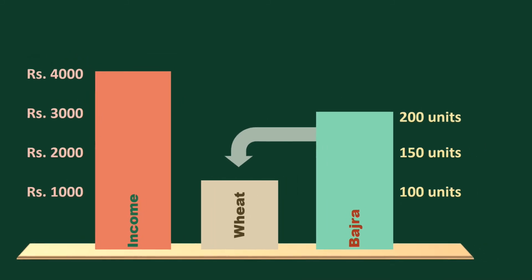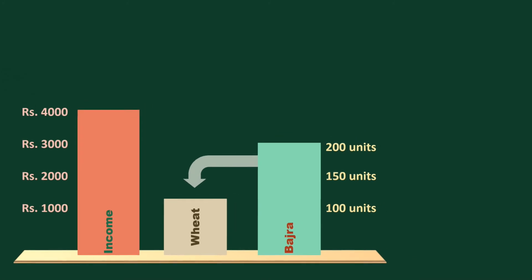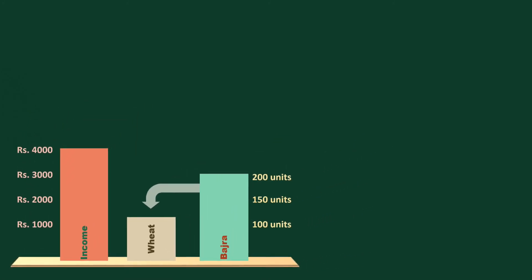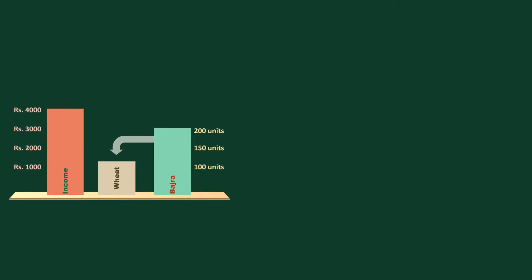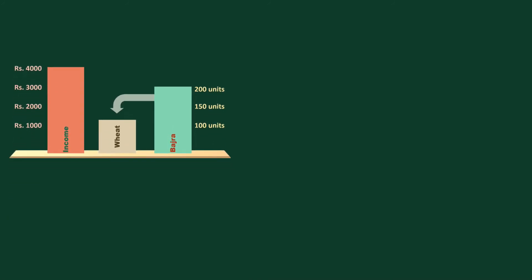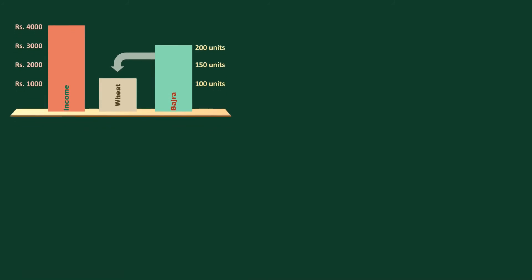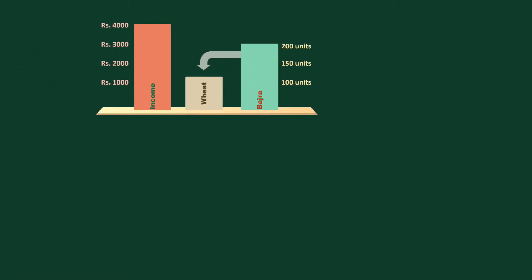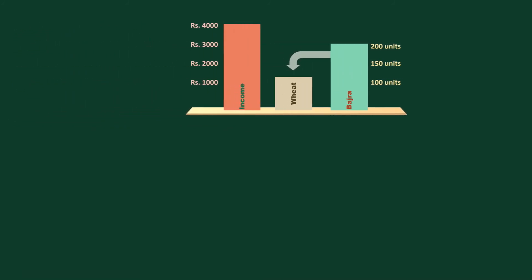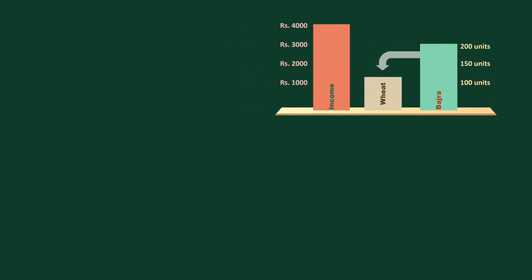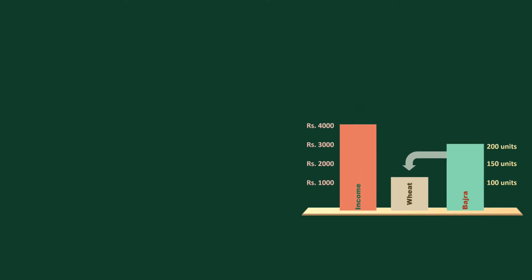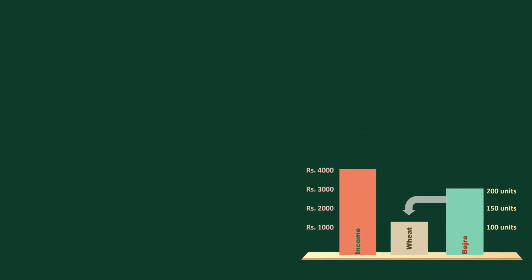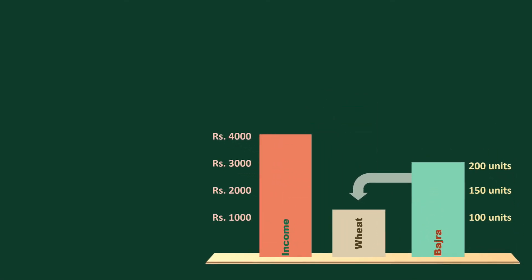IC analysis doesn't do that. For that matter, it never says specifically these are normal goods and these are inferior goods by naming the goods. It says only when the income exceeds a certain limit, some goods become inferior. Normal good or inferior good, it all depends on the income range, assuming the prices of goods remain constant. We shall end our discussion with this.